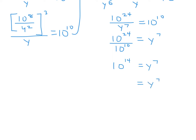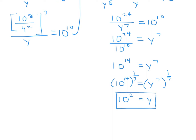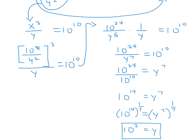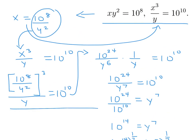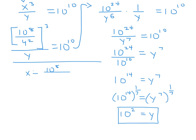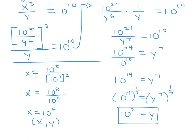Taking everything to the 1/7 power gives y equals 10 squared, so y equals 100. Now x equals 10 to the power of 8 over y squared. Since y is 10 squared, y squared is 10 to the fourth, so x equals 10 to the power of 8 over 10 to the power of 4, which is 10 to the power of 4. So x equals 10 to the 4 and y equals 10 squared.